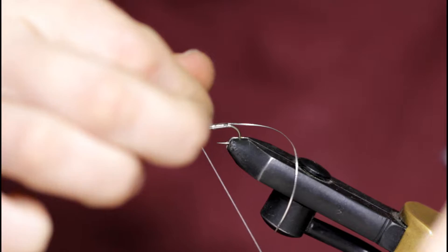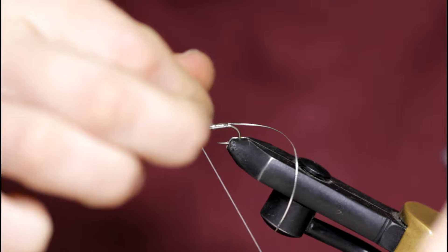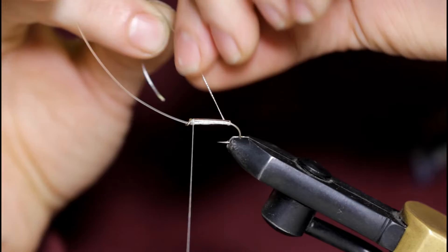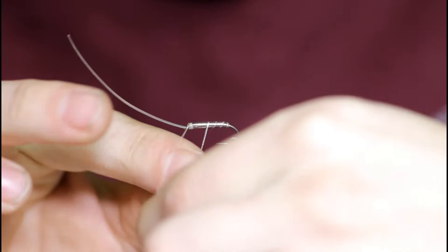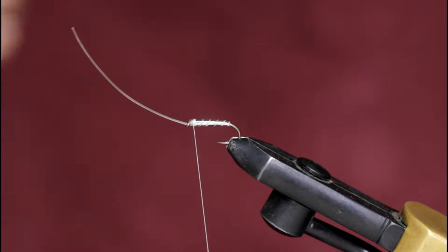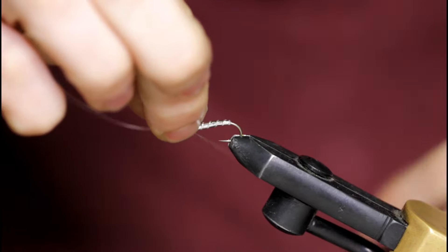Now I'm just going to secure the material, come in and snip it off, and wrap this oval tinsel to protect the body. About four wraps. Bind that down, snip it off, and throw a couple half hitches in, snip it off.